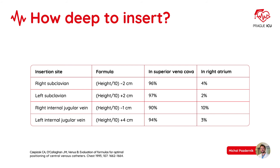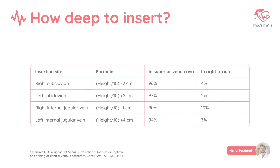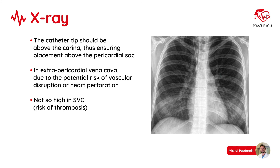An important question is how deep to insert the line. We can cite the Sepsiac article published years ago. The correct position in the superior vena cava can be calculated as follows: height of the patient divided by 10, then subtract 1, and we get the number in centimeters. On x-ray, the catheter tip should be above the carina, ensuring placement above the pericardial sac. The correct site should be in the extrapericardial vena cava, due to the potential risk of vascular disruption or heart perforation. On the other side, the line shouldn't be placed too high in the CVC, as this increases the risk of thrombosis.